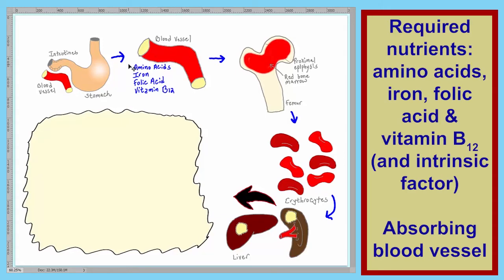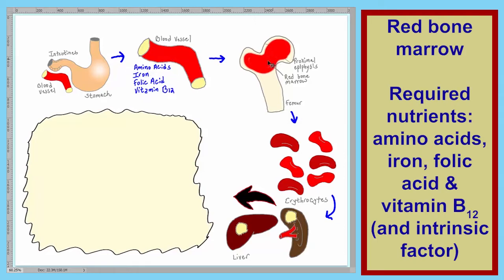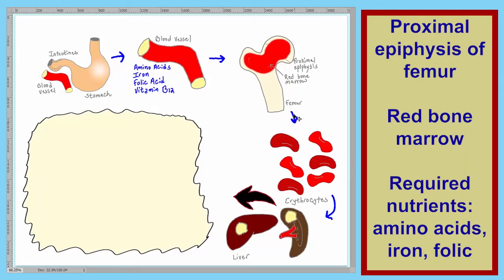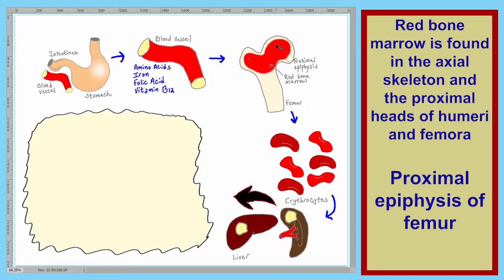The elements required for the synthesis of red blood cells — for erythropoiesis — are amino acids, iron, folic acid, and vitamin B12. We've already discussed iron in detail. These components move to the bone marrow. Shown here is the proximal end of the femur. In the proximal epiphysis, we have the red bone marrow, and this is where red blood cells are made. Red blood cells are made in the axial skeletal system and in the proximal epiphysis of our long bones.